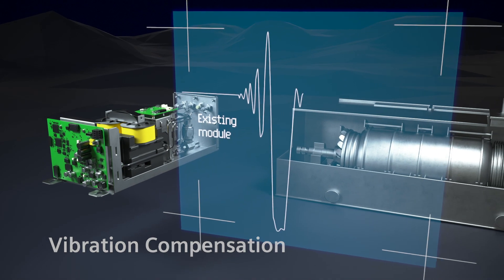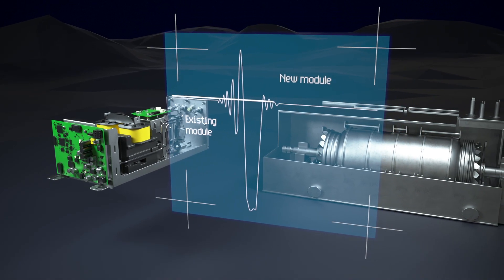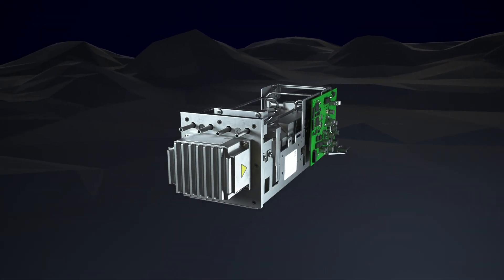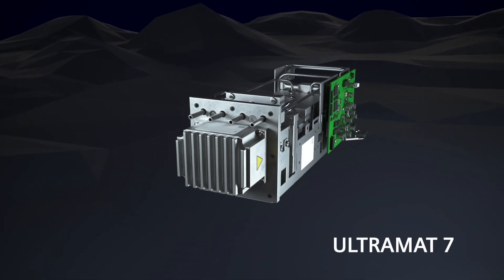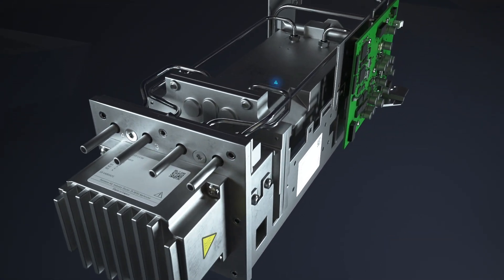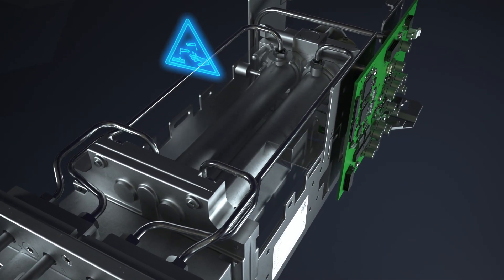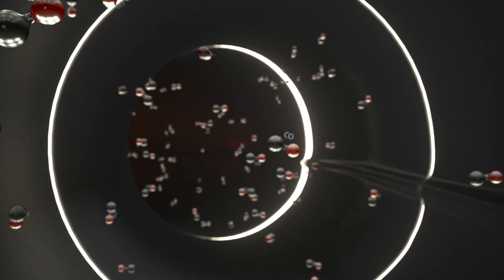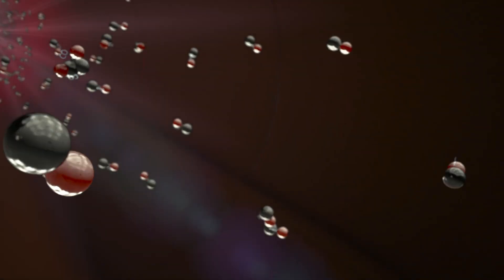For example, if measuring gases have a high water content or the system is deployed in harsh environments. Thanks to the materials selected for its gas-carrying parts, the new Ultramat 7 is also available for applications with corrosive measuring gases. A heated version is available for gases with a high water content.